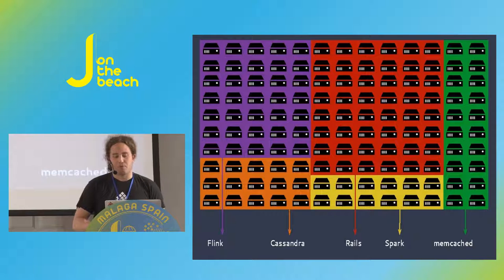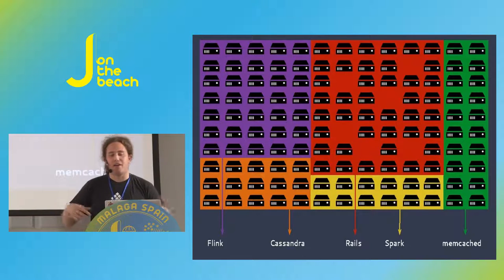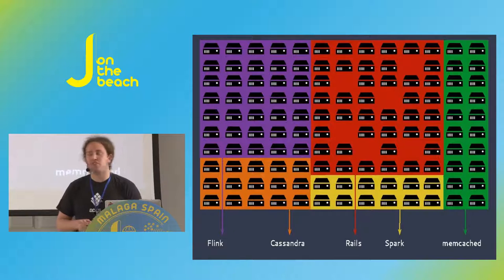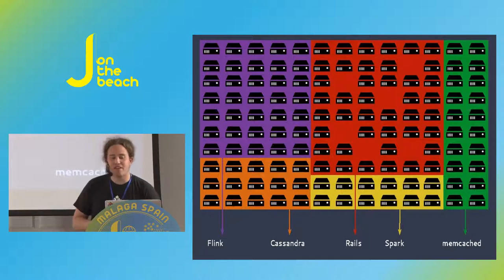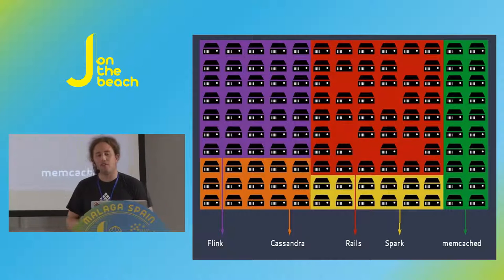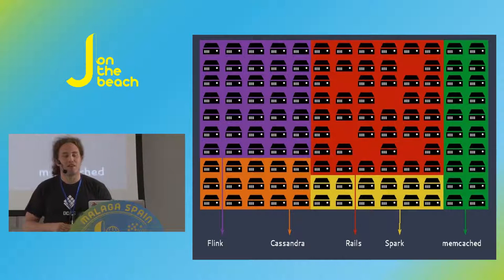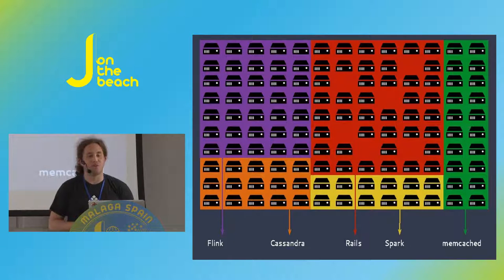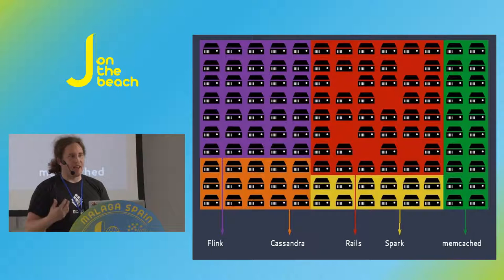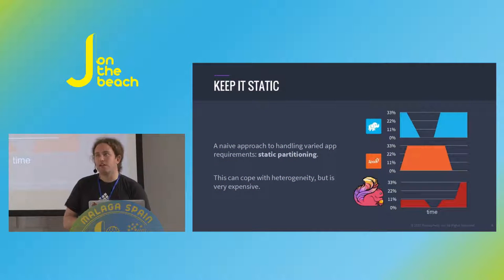This yields a number of problems. The first one: what happens when machines fail? For example, if Rails — the user-facing part of my application — has some nodes failing, maybe a switch or an entire rack fails, I as an operator have to physically move nodes from my Memcached or Flink cluster over to the Rails part just to maintain the same latency for users. I don't want to be paged at night just because some nodes failed.